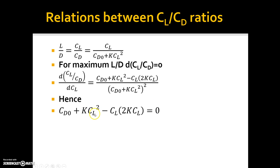So I have KCL squared minus, so CL into here gives me 2KCL squared, so plus K minus 2K gives me a minus K, so I get CD0 minus KCL squared.